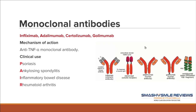Now let's look at monoclonal antibodies. 'Mono' means one, and 'clonal' means cloning single antibodies. We have infliximab, adalimumab, certolizumab, and golimumab. Whenever you see the suffix 'MAB,' that stands for monoclonal antibody. On the board exam, once you see MAB, you know we're talking about a monoclonal antibody. These are anti-tumor necrosis factor alpha monoclonal antibodies.